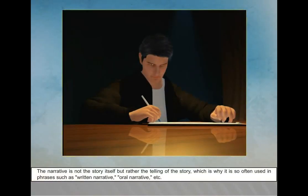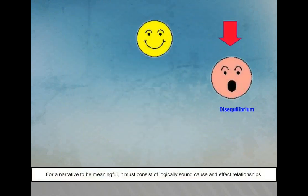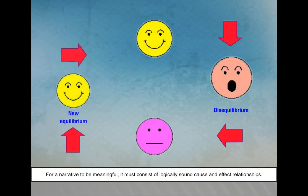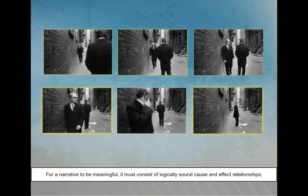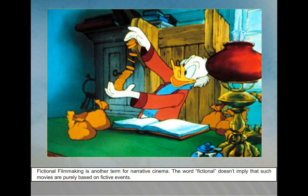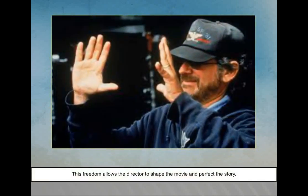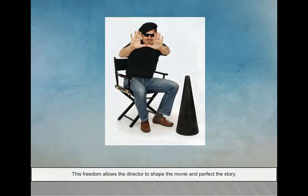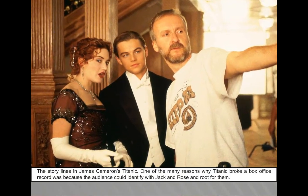The narrative is not the story itself but the telling of the story, which is why it is used in phrases such as written narrative or oral narrative. Film narrative is the depiction in the medium of film of a series of events and cause-and-effect relationships occurring in time. For a narrative to be meaningful, it must consist of logically sound cause-and-effect relationships. Fictional filmmaking is another term for narrative cinema — 'fictional' does not imply purely fictive events. This freedom allows the director to shape the movie, as seen in James Cameron's Titanic, where audiences could identify with Jack and Rose.